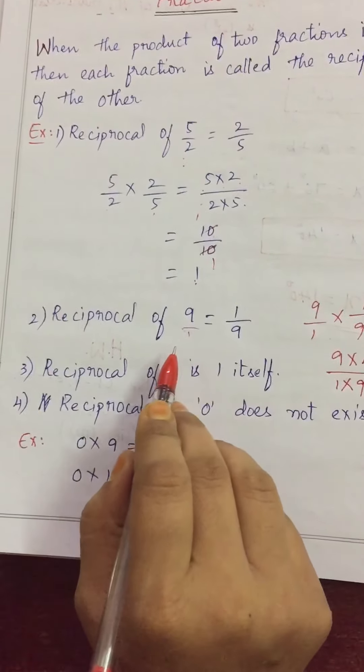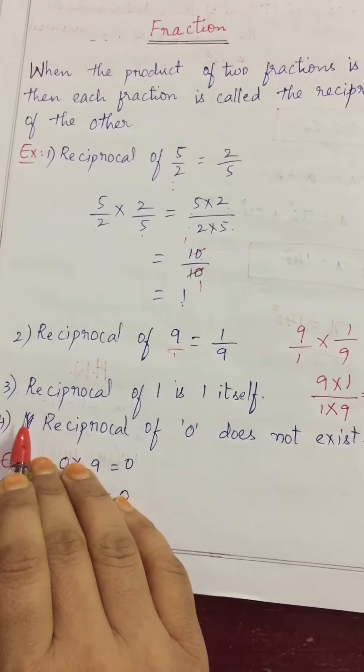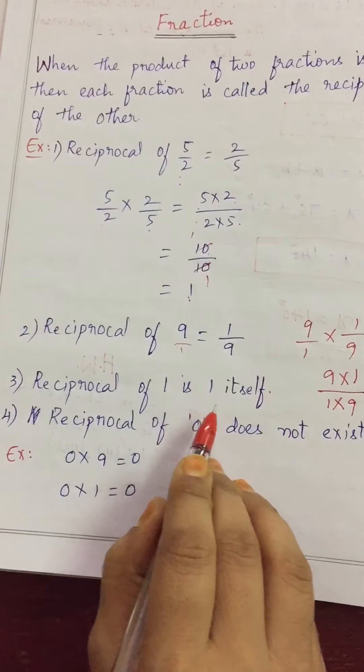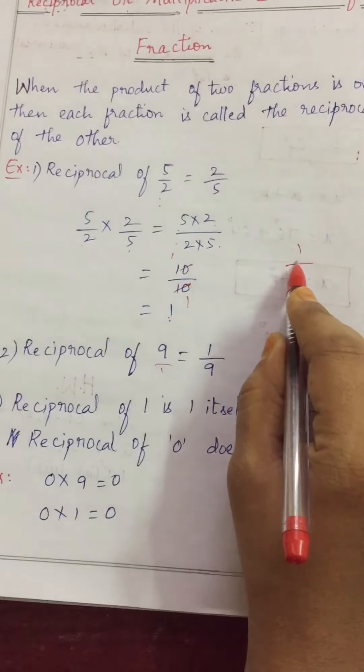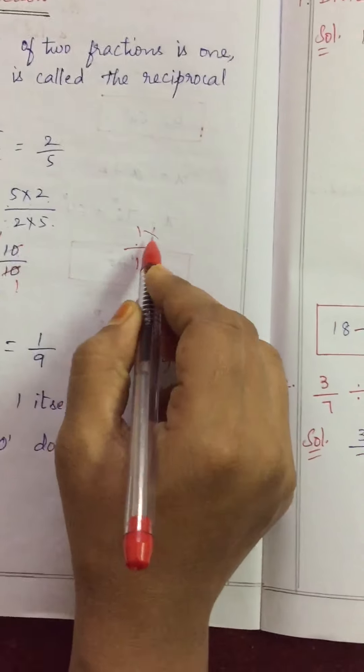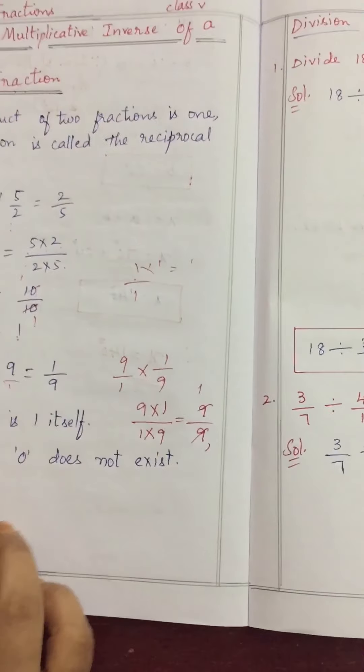So, reciprocal is reverse of a fraction. An important point. Reciprocal of 1 is 1 only. How? 1 is there. 1 we can write 1 by 1. What we have to multiply with 1 to get 1? 1 only. So, reciprocal of 1 is 1 only.